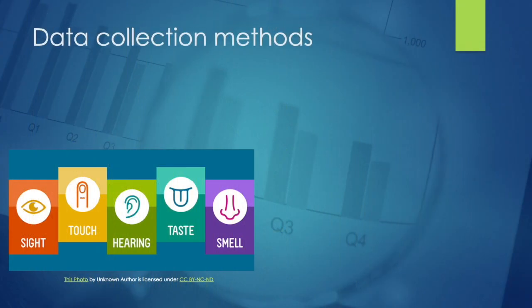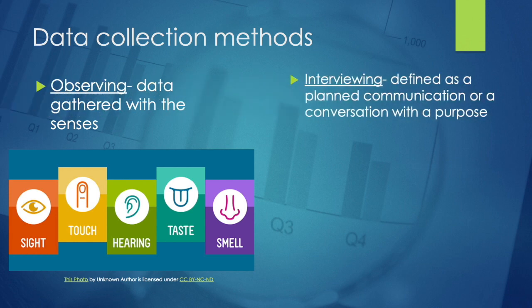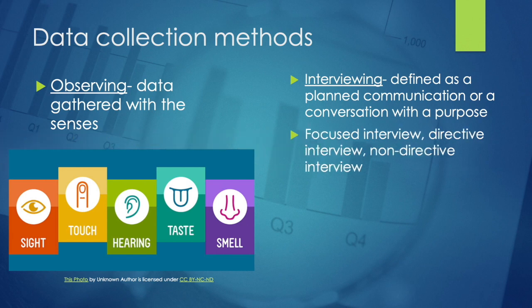Data collection methods: you can collect data by observing, which is any data gathered with the senses including sight, touch, hearing, taste, and smell. You can also collect data by interviewing, defined as a planned communication or conversation with a purpose. Types of interviews include a focused interview, directive interview, and non-directive interview. A focused and directive interview are similar — both focus on a specific problem to collect specific information. A non-directive interview is more open-ended and allows the patient to control the conversation.